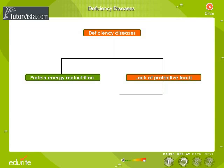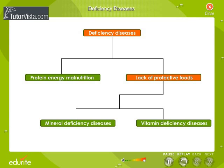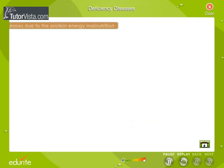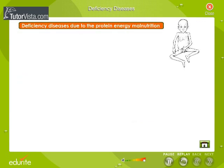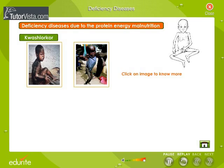The second group can be further classified into mineral deficiency diseases and vitamin deficiency diseases. Click on the links provided for deficiency diseases due to protein energy malnutrition.